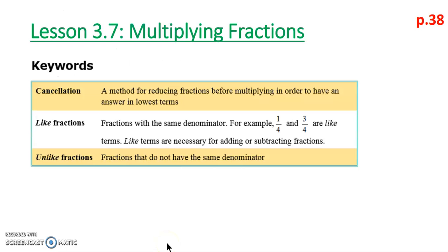There are some key words for this lesson. Cancellation is where we use a method where we cross-cancel by factors that exist for both numbers. Like fractions are fractions that have the same denominator, for example, one-fourth and three-fourths. When we do adding and subtracting fractions, we need the fractions to be like fractions. But for multiplying and dividing fractions, the fractions can be unlike.